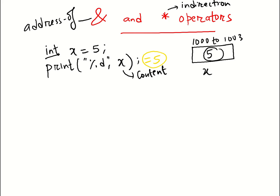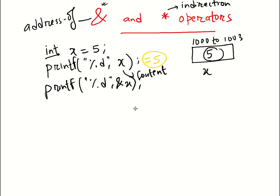Now what if I want to display the address, which is 1000? To get the address of any variable I use the ampersand operator. So if I write 'printf("%d", &x)', ampersand x gives me the address of x, which should print 1000. You may get a warning in your GCC compiler with this format specifier, but technically you should get the address of x, which is 1000.